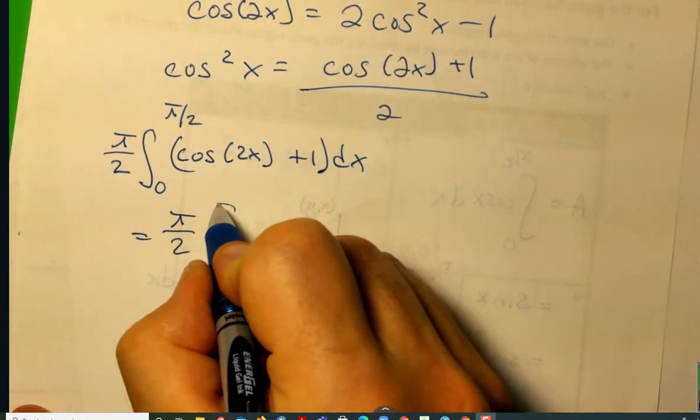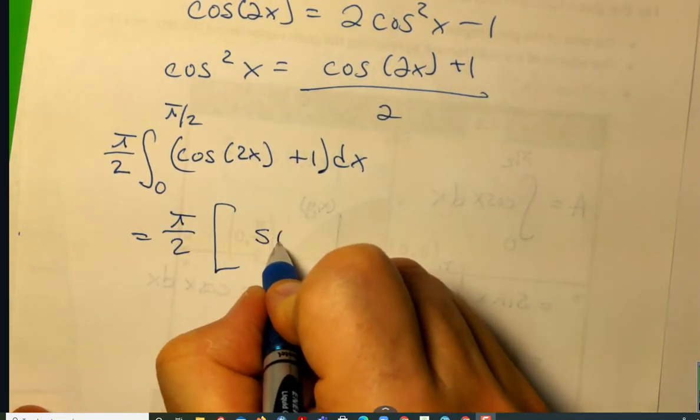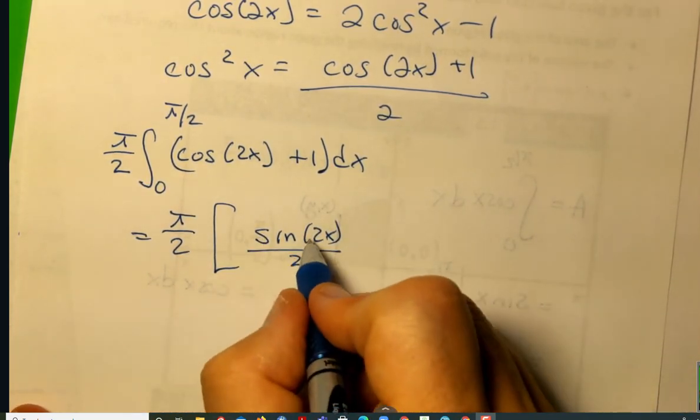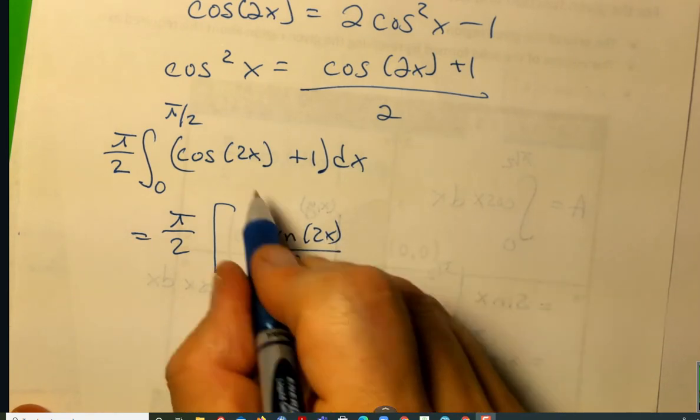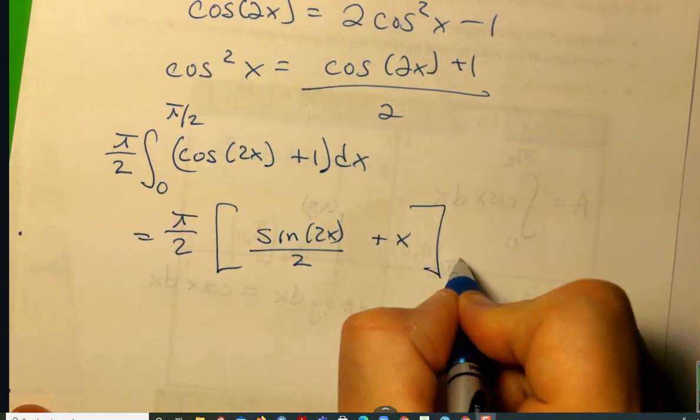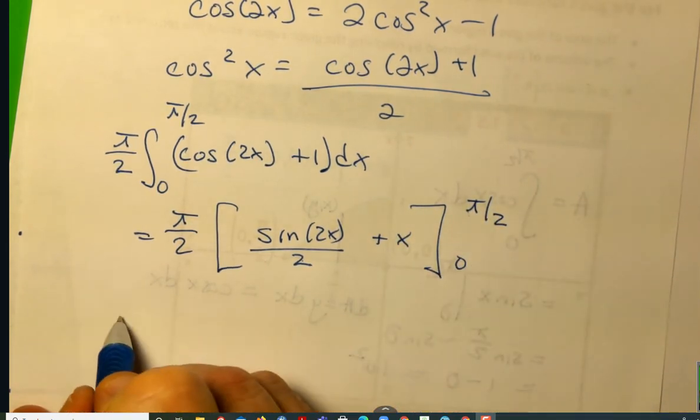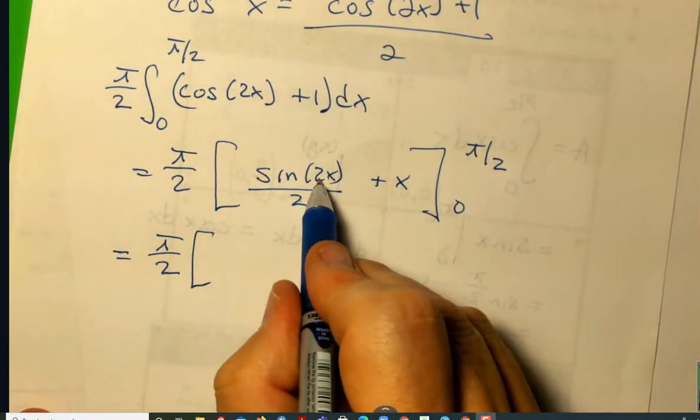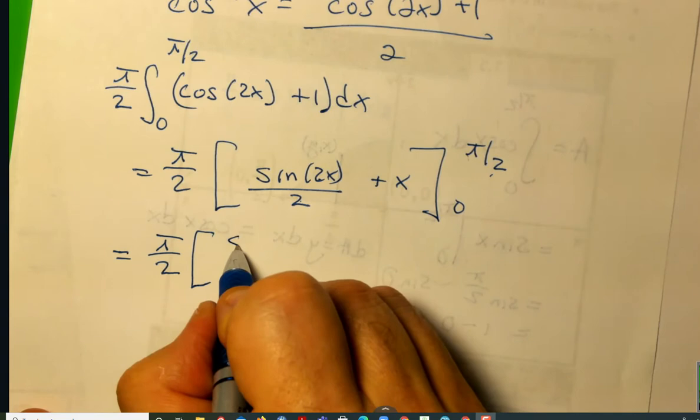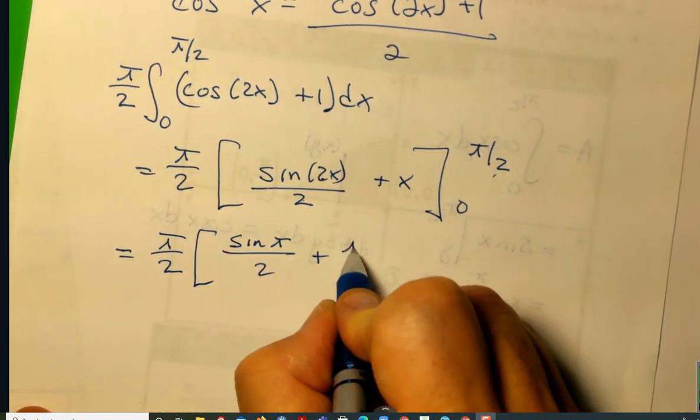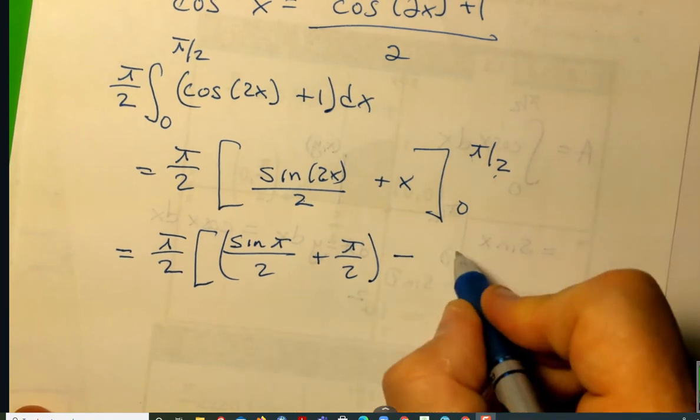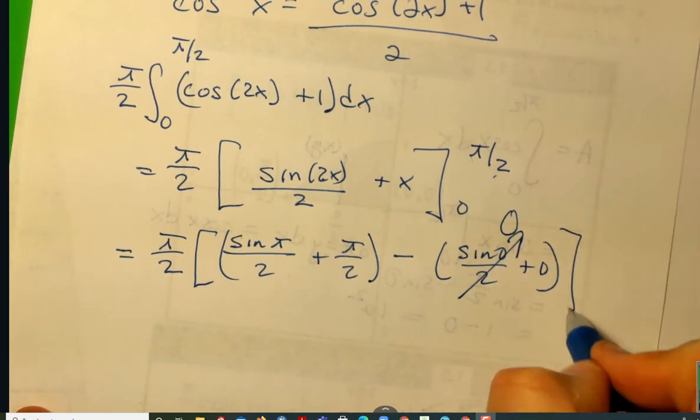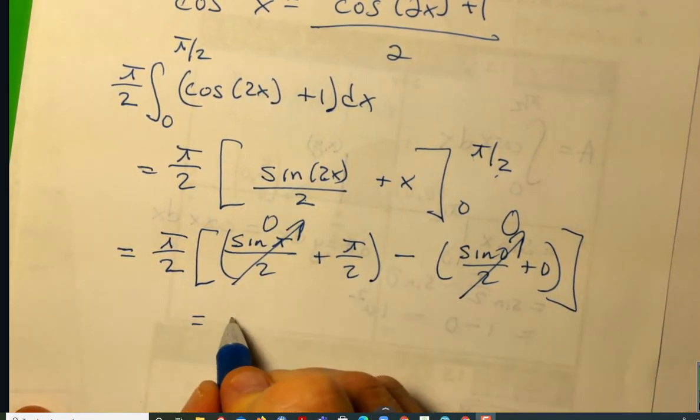So pi over 2. The anti-derivative of the cosine is the sine of the double angle. We're going to divide that by 2. Now take that derivative. It would be cosine 2x times 2 over 2, which is cosine 2x plus x from 0 to pi over 2, which is pi over 2. 2 times pi over 2 is just pi. Plus pi over 2. Minus the sine of 0 over 2 plus 0. But that better be 0. That is 0.